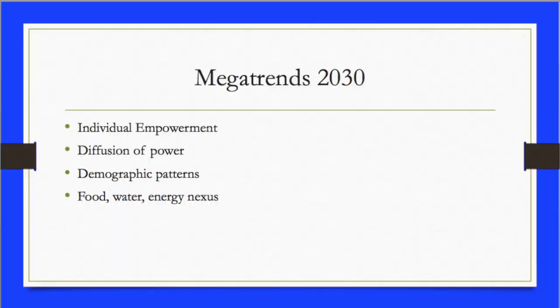Megatrends 2030 are categorized into four subsections: individual empowerment, diffusion of power, demographic patterns, and the food, water, and energy nexus.